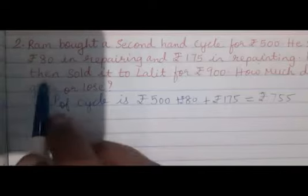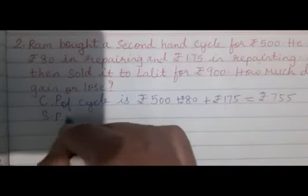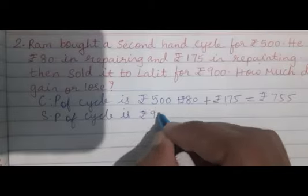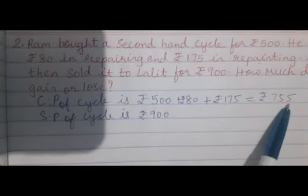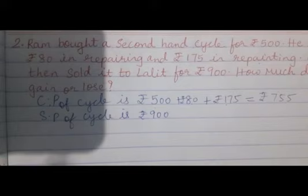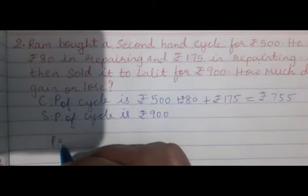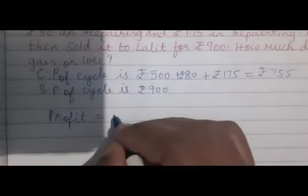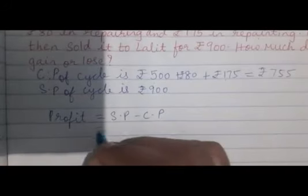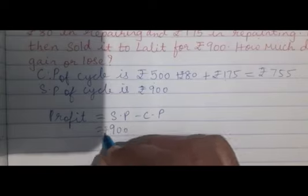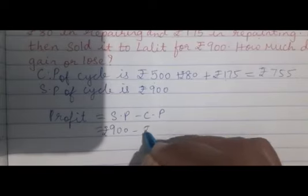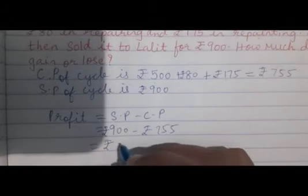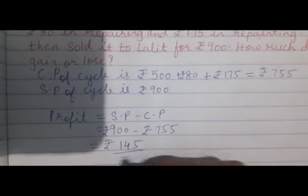Then he sold it to Lalit. So selling price of cycle is rupees 900. Which one is greater, cost price or selling price? Selling price is greater. That means it's a profit. How much profit? Selling price minus cost price. 900 rupees minus 755 rupees. The answer is 145 rupees.